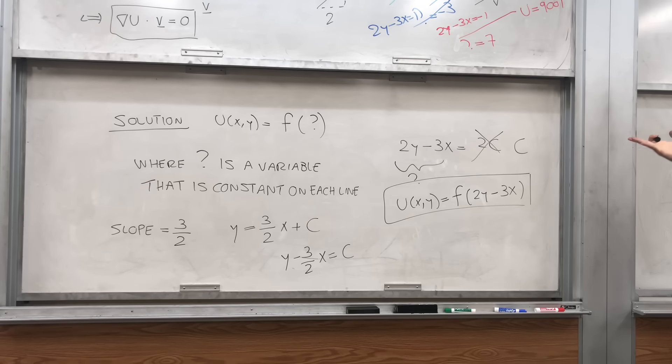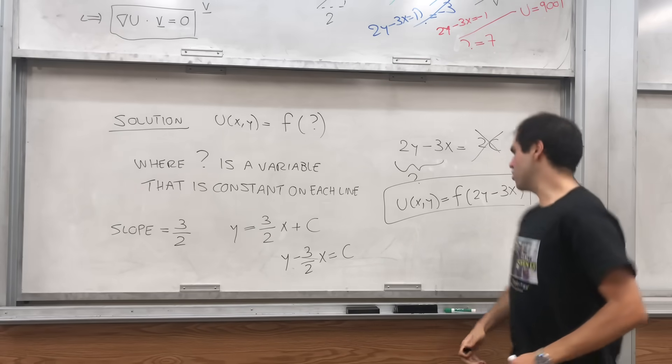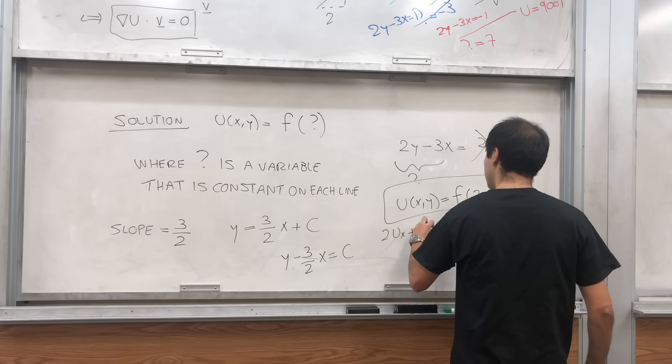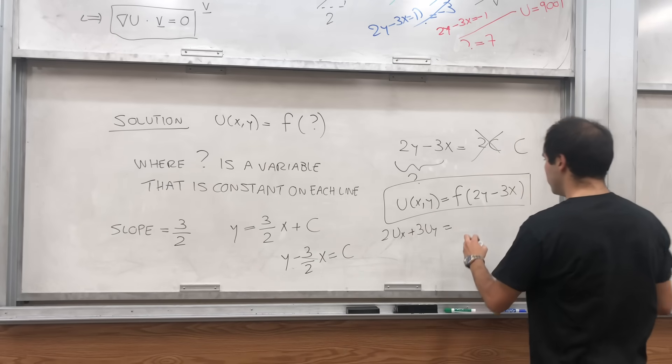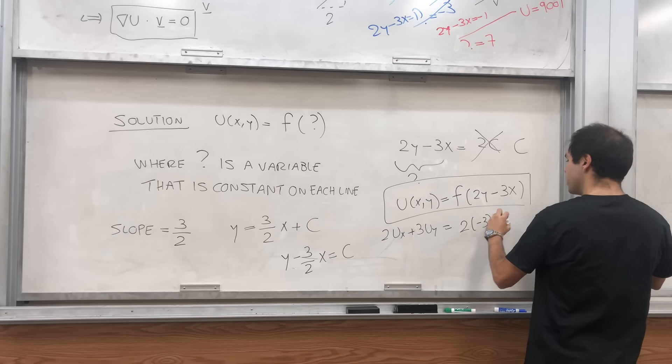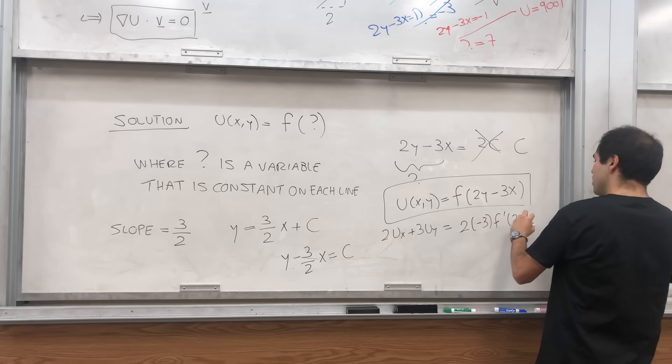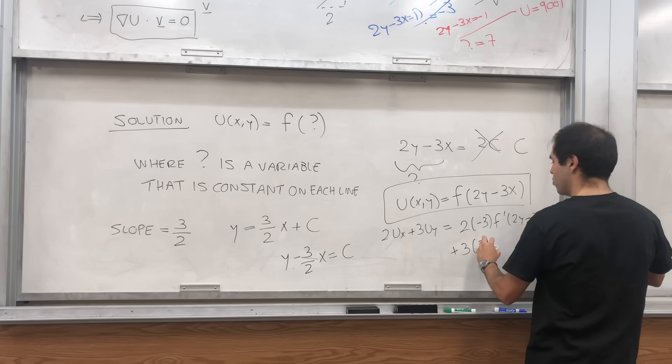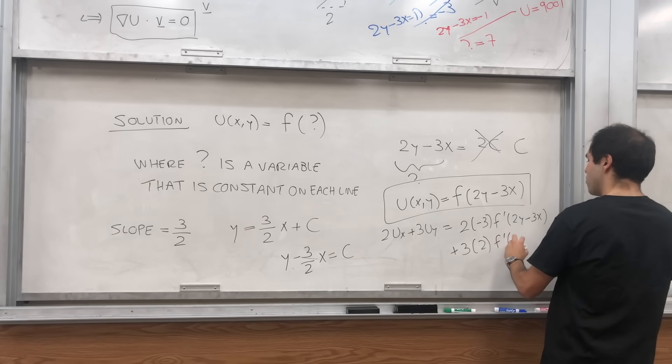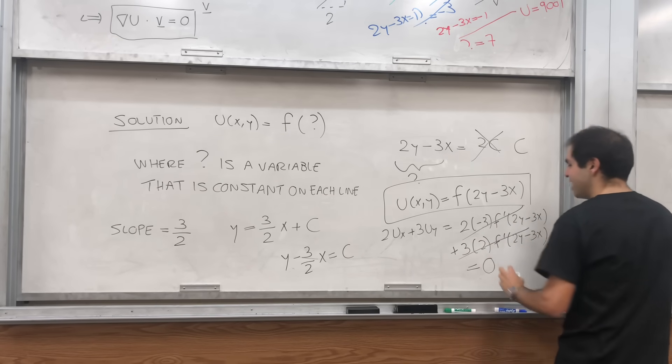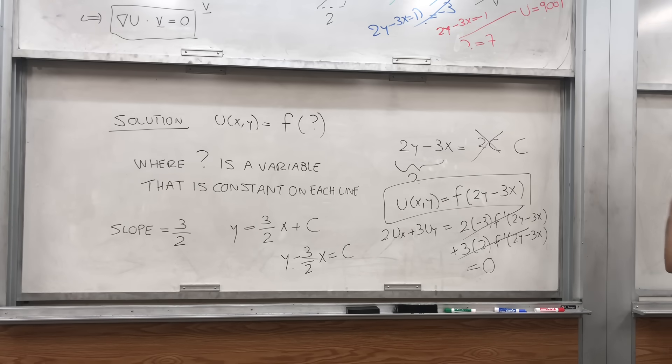And indeed, if you want, you can check using the chain rule, that if 2ux plus 3uy, what you do is 2 times the derivative with respect to x to get minus 3 f prime of 2y minus 3x, plus 3 times the derivative with respect to y, 2 times f prime, 2y minus 3x. And boom, those things cancel out and you indeed get zero. And in fact, that is the solution of this equation.